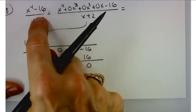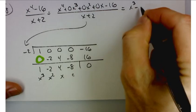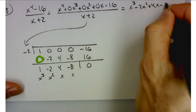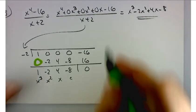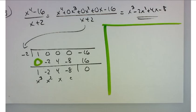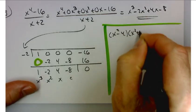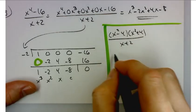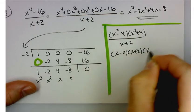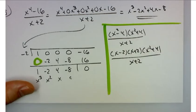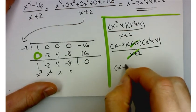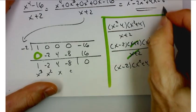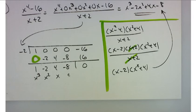This tells us that x plus 2 is a factor. You could also do this by factoring the numerator: x⁴ minus 16 factors as x² minus 4 times x² plus 4, and then x² minus 4 factors again as x minus 2 times x plus 2, times x² plus 4. You can see that x plus 2 is a common factor — cancel it out, and if you multiply x minus 2 times x² plus 4, you get exactly what we got from synthetic division.